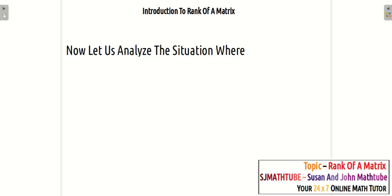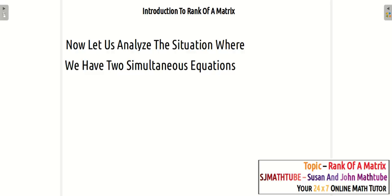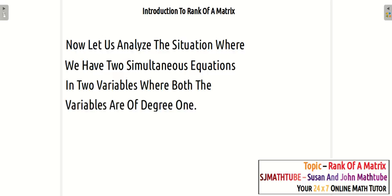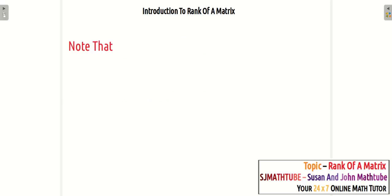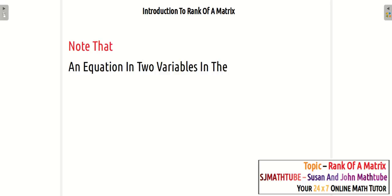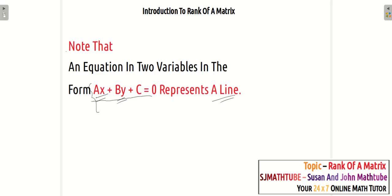Let us go for the simplest possible case: a linear equation in two variables. Imagine we have two simultaneous equations in two variables where both variables are of degree 1. I think you remember your high school geometry when you started learning 2D geometry.